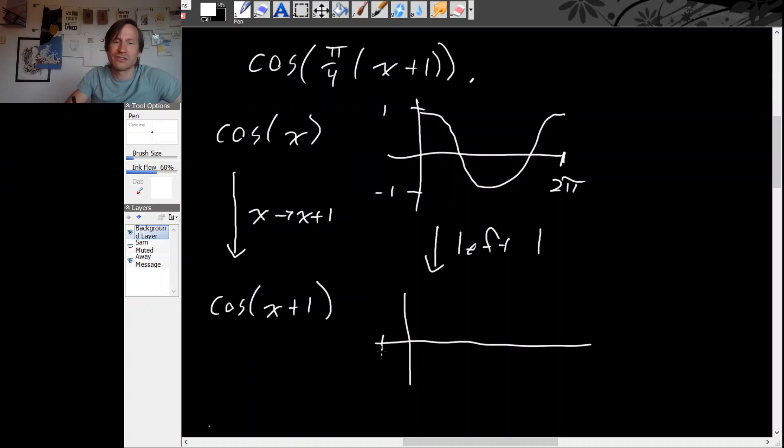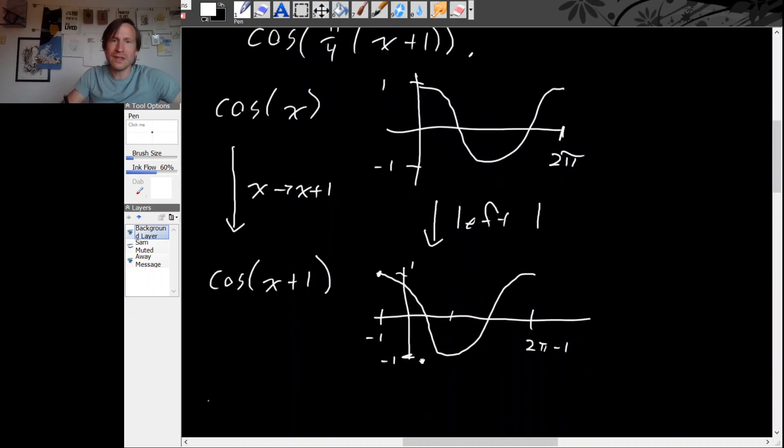So now our cycle is starting at minus 1. Horizontally it's starting at minus 1. Vertically it's starting at 1. And it's ending at, well I guess this is 2 pi minus 1, whatever that is, it's something like 5.24. So it looks something like this. Vertically it's going between 1 and minus 1.